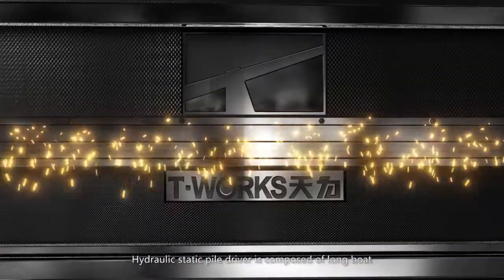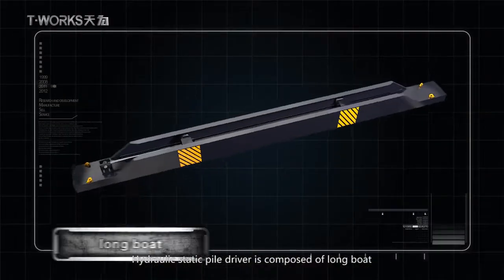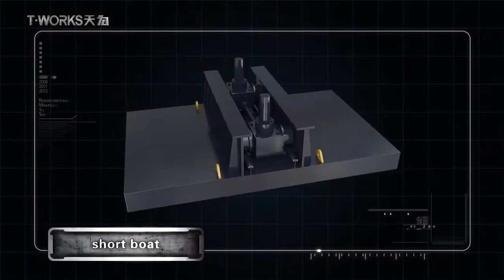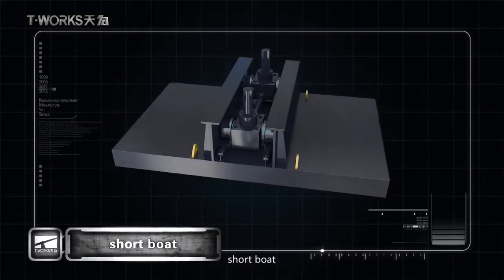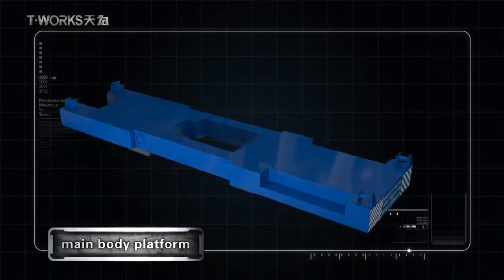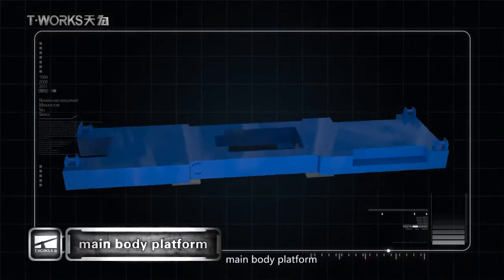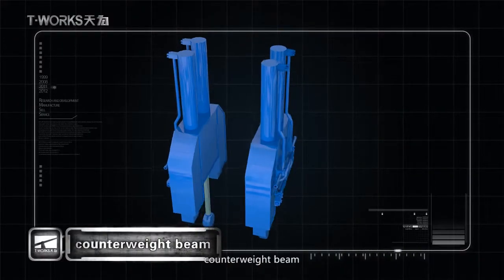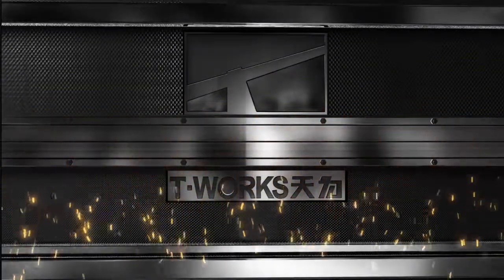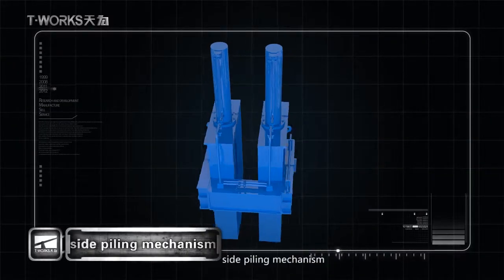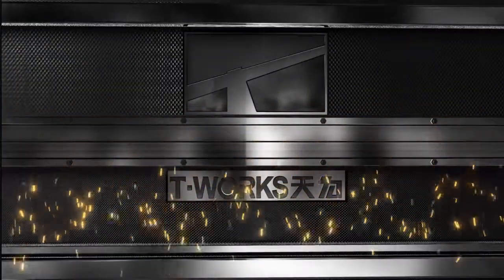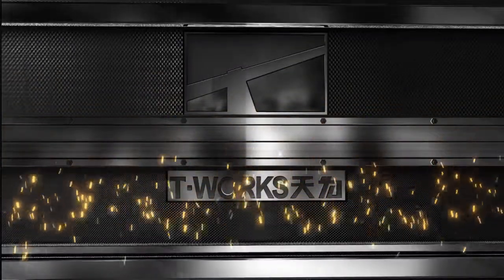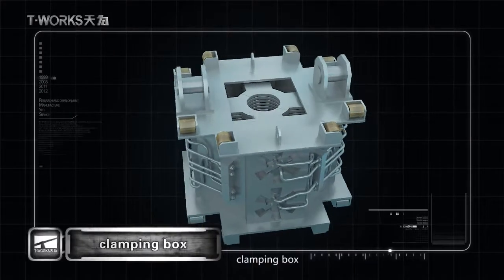Hydraulic static piledriver is composed of long bolt, short bolt, main body platform, counterweight beam, side piling mechanism, cross speed, and clamping box.